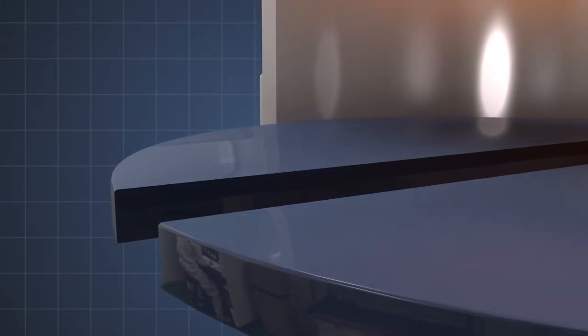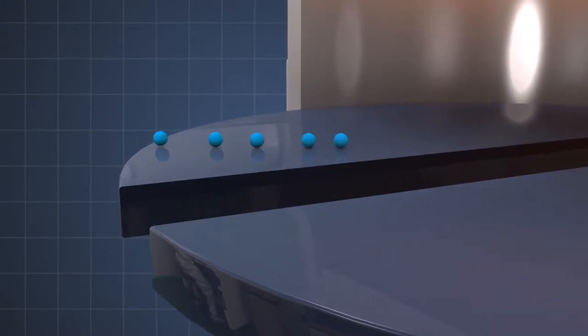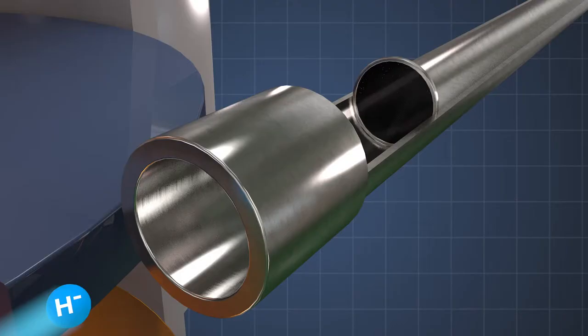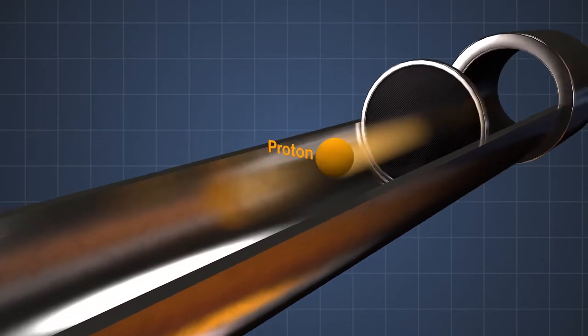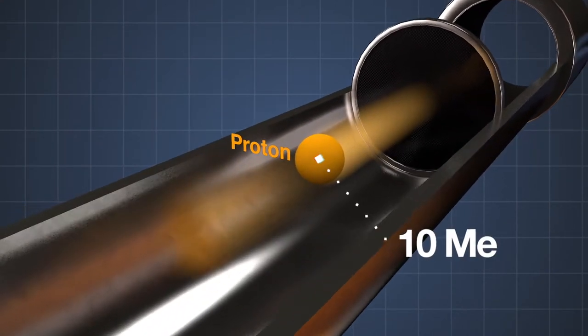When hydrogen anion passes through the outermost orbit to the outlet, electron is detached by the carbon-thin film, making it proton, and the energy reaches a sheer 10 million electron volts at that time.